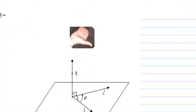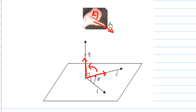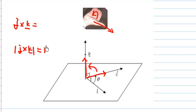Let's look at another case. To find j cross k: we have vector j parallel to the y-axis and vector k parallel to the z-axis. When finding j cross k, I must turn from j to k using the right hand. When I turn the right hand this way, the thumb points towards the direction of i. Therefore, j cross k is in the same direction as i. The magnitude of j cross k is 1, so j cross k equals i.